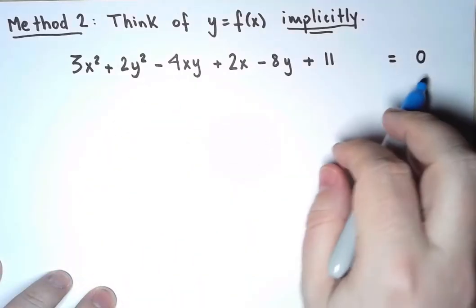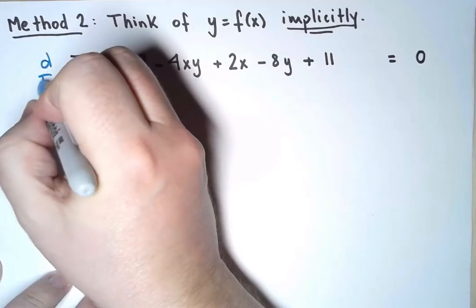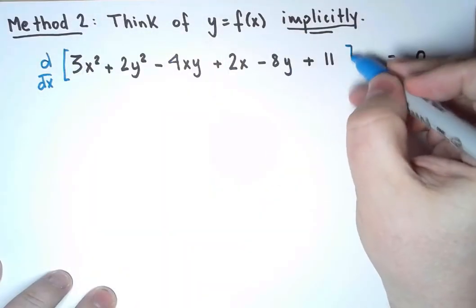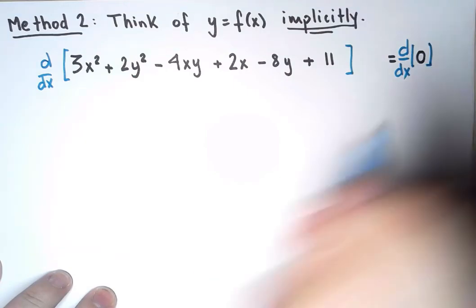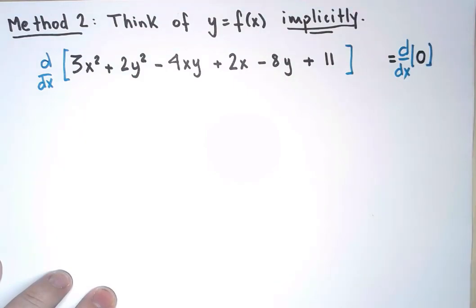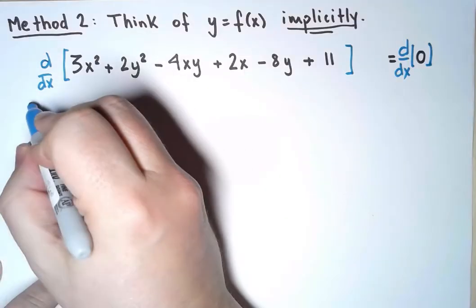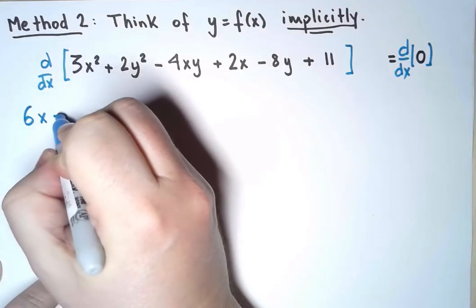If this equation is true, it must also be true that the derivative with respect to x of the left-hand side is equal to the derivative with respect to x of the right-hand side. So, let's take the derivative slowly. The derivative of 3x² is 6x.